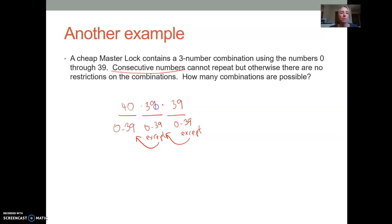The counting principle tells us multiply these together. 40 times 39 times 39 is 60,840. So if you buy a master lock and then you lose the combination sheet, you have to try potentially 60,840 combinations until you might finally find the right one. Hopefully it doesn't come to that. It might be worth it just to buy a new one if that does happen.